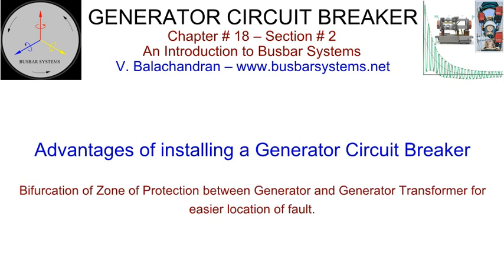Without a generator circuit breaker, the generator neutral point to the terminal of the HV circuit breaker connected to the generator transformer, and tap-offs in between to the auxiliary transformer, excitation transformer, surge protection voltage transformer cubicles, will comprise a common zone of protection for isolation by the HV breaker in the event of a fault within the zone. With the generator circuit breaker, it is possible to split the zone into two. One zone comprises all elements from the terminal of the HV breaker to the terminal of the generator circuit breaker on generator transformer side, comprising generator transformer, auxiliary transformers, surge protection and voltage transformer cubicle, if separately installed, and any other tap-off in between. The fault in the respective zones can be isolated, thereby minimizing the time taken to identify the fault and synchronizing the unit back in service. For generators starting up and shutting down, only the generator circuit breaker needs to be operated.